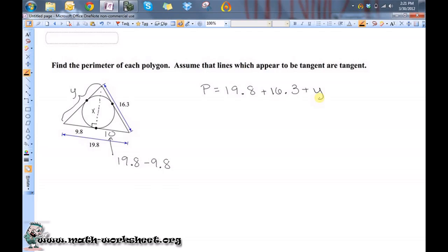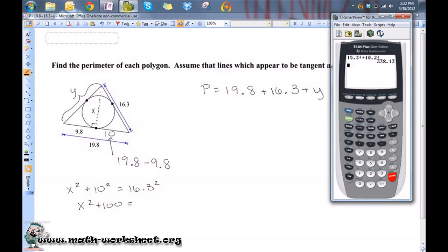Okay, so let's start by finding this x. x squared plus 10 squared should equal 16.3 squared. So, x squared plus 100 equals 16.3 squared is 265.69.